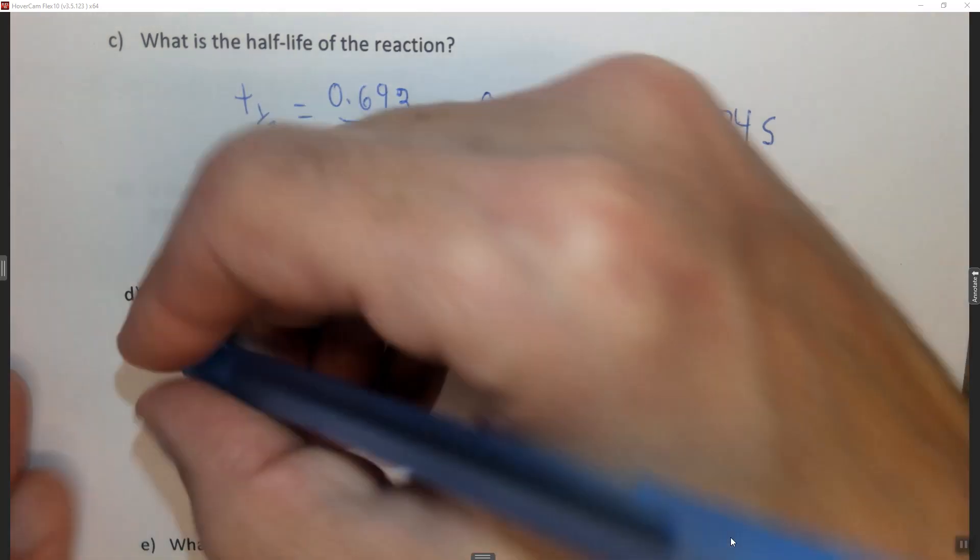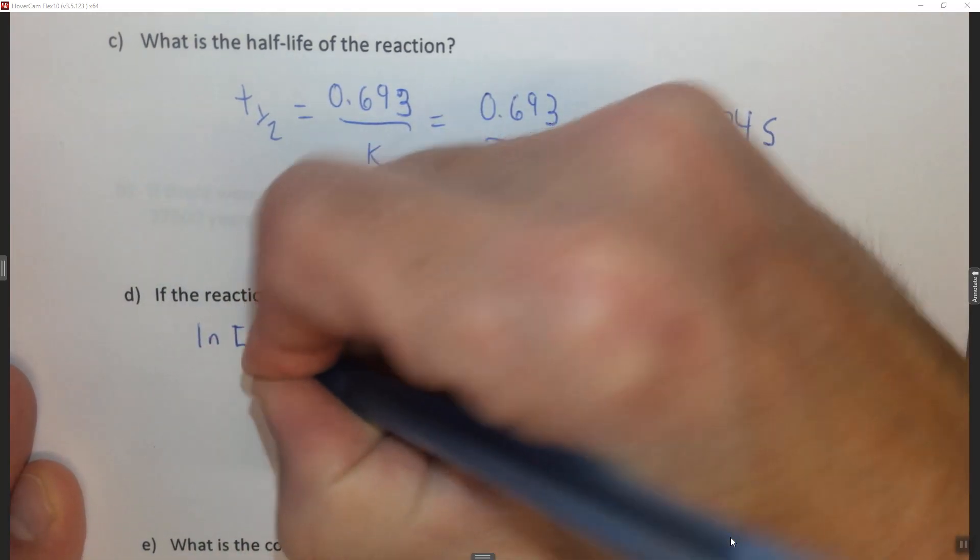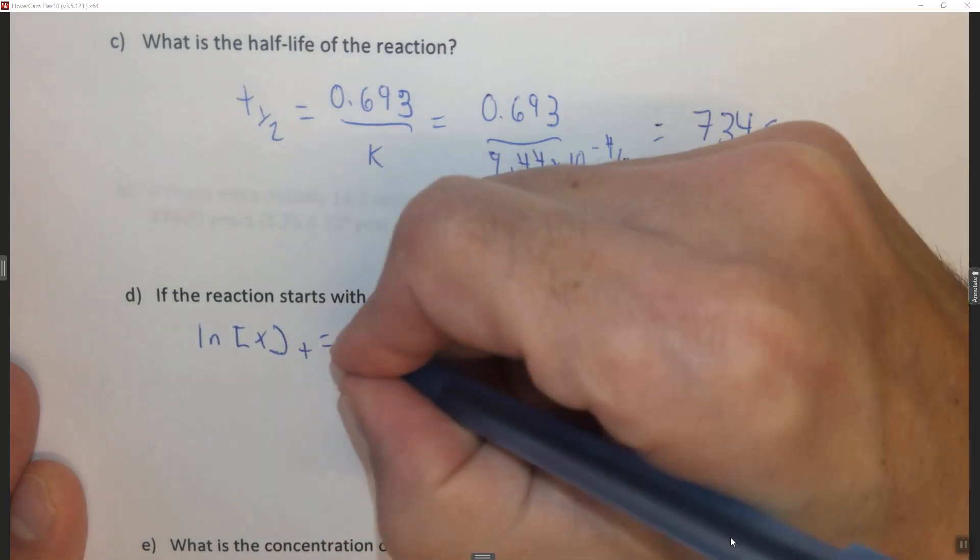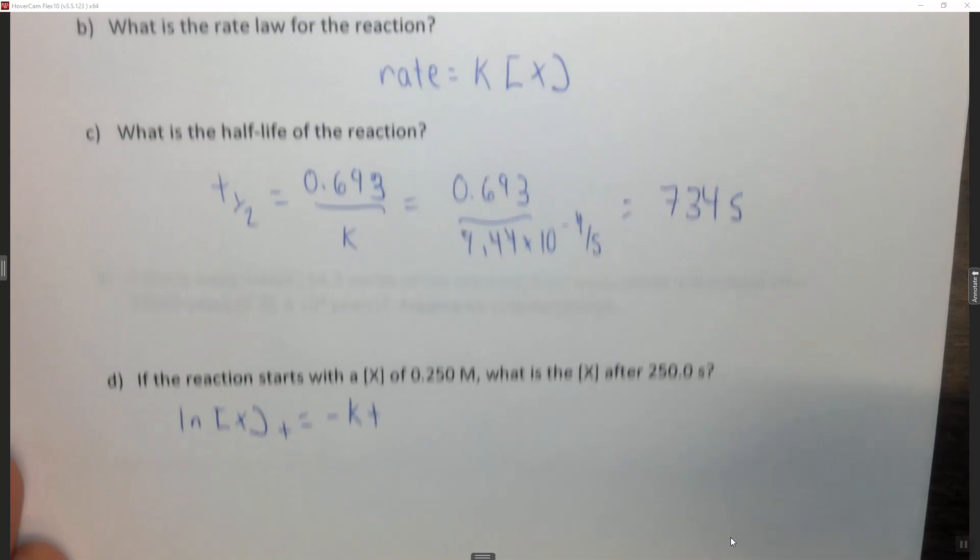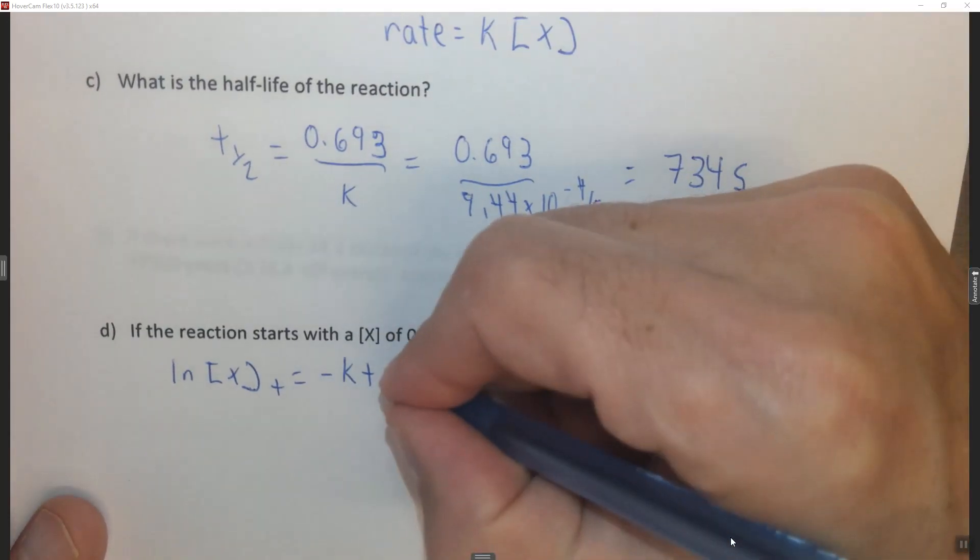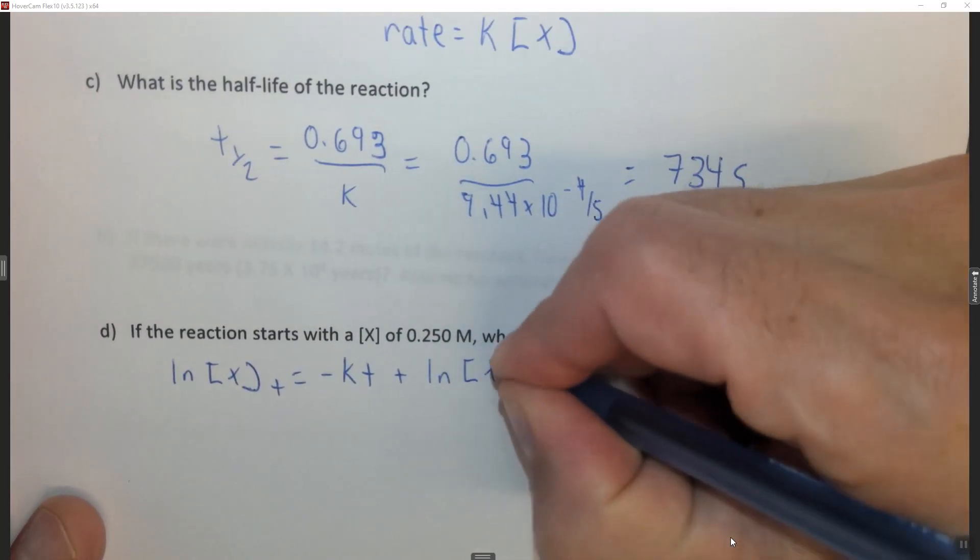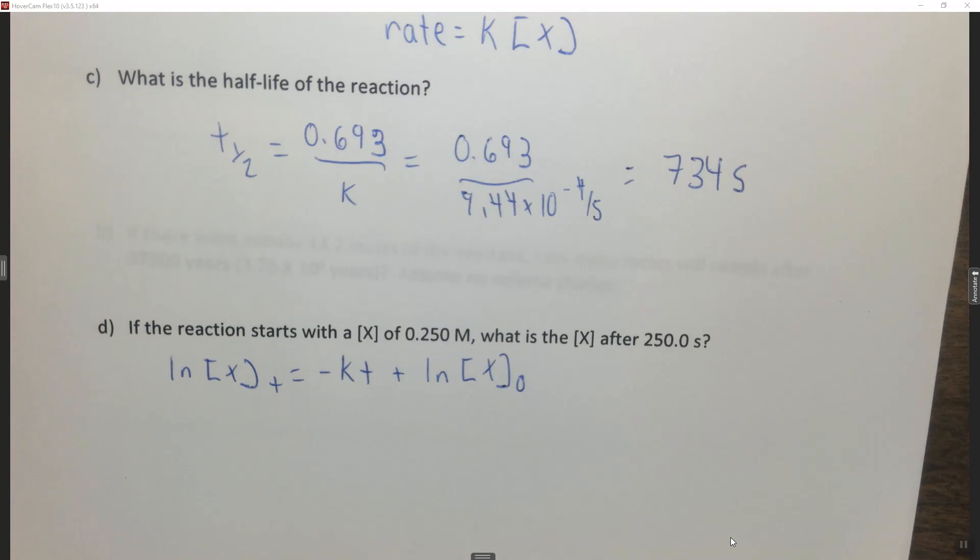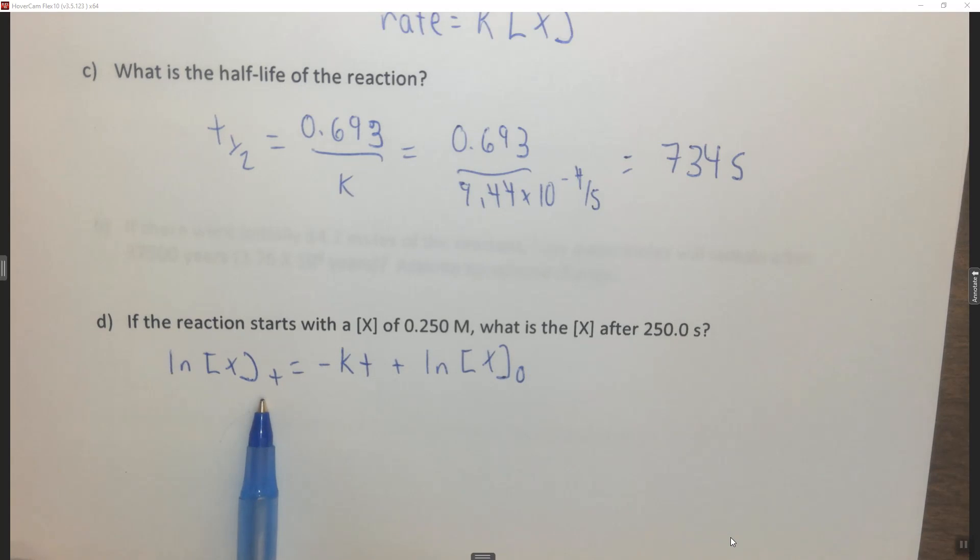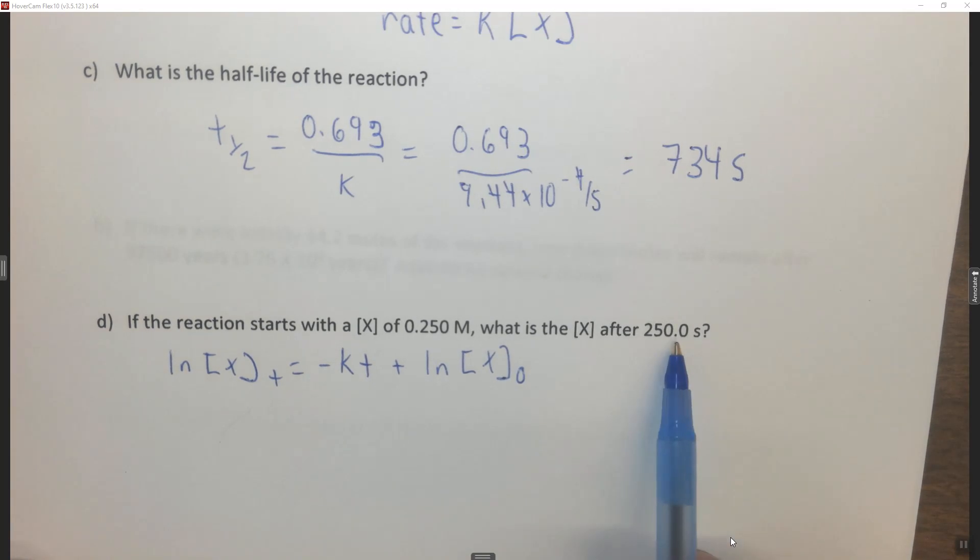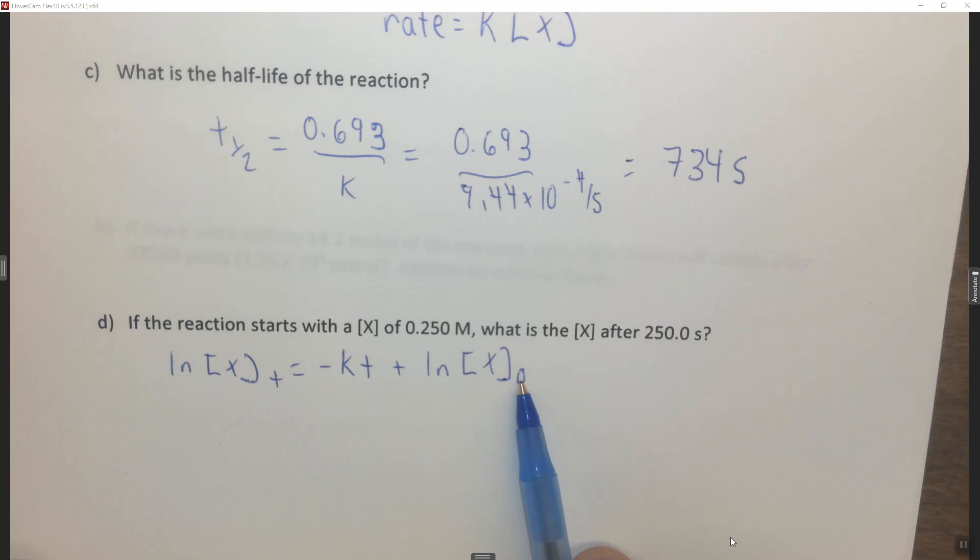So we need the ln of the concentration of x at some time equals negative kt, we know k, we determine that up here, plus the ln of the initial concentration of x. So here our variable is the concentration of x at some time, specifically the time is 250 seconds. We know k, we know t, 250 seconds, and we know the initial concentration of x. So t means after some time and x at 0 means initially.